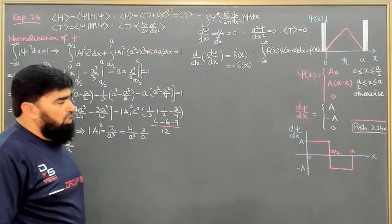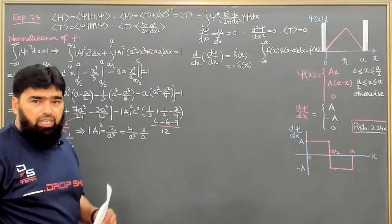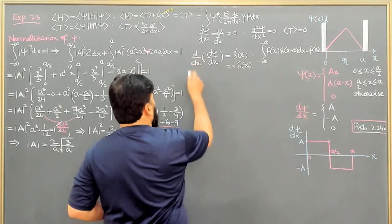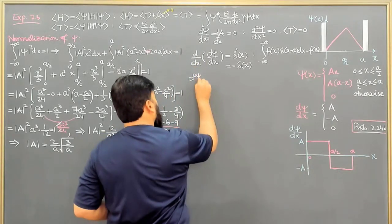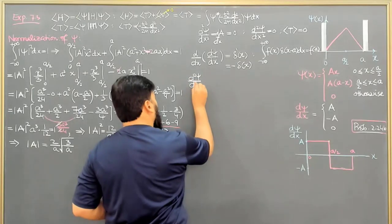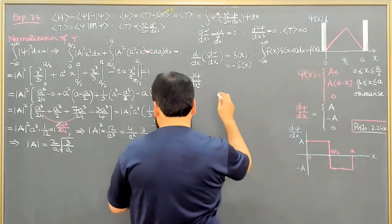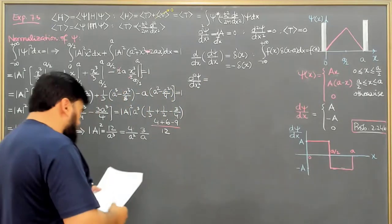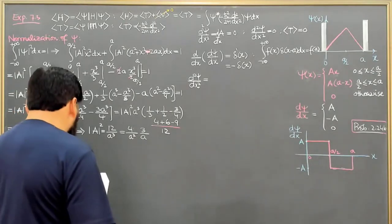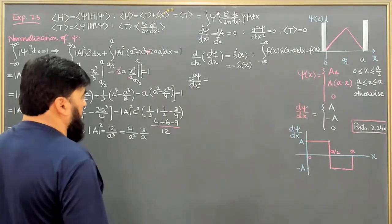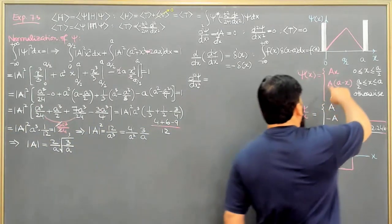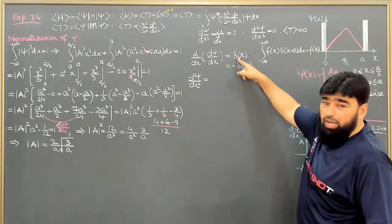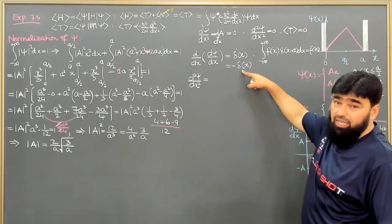From part A of this problem, I can write that D squared psi over Dx squared — this is a little tricky in how the function converts. I need to work through it carefully. Delta prime of x equals minus delta x, so the minus sign means the limits are being interchanged.